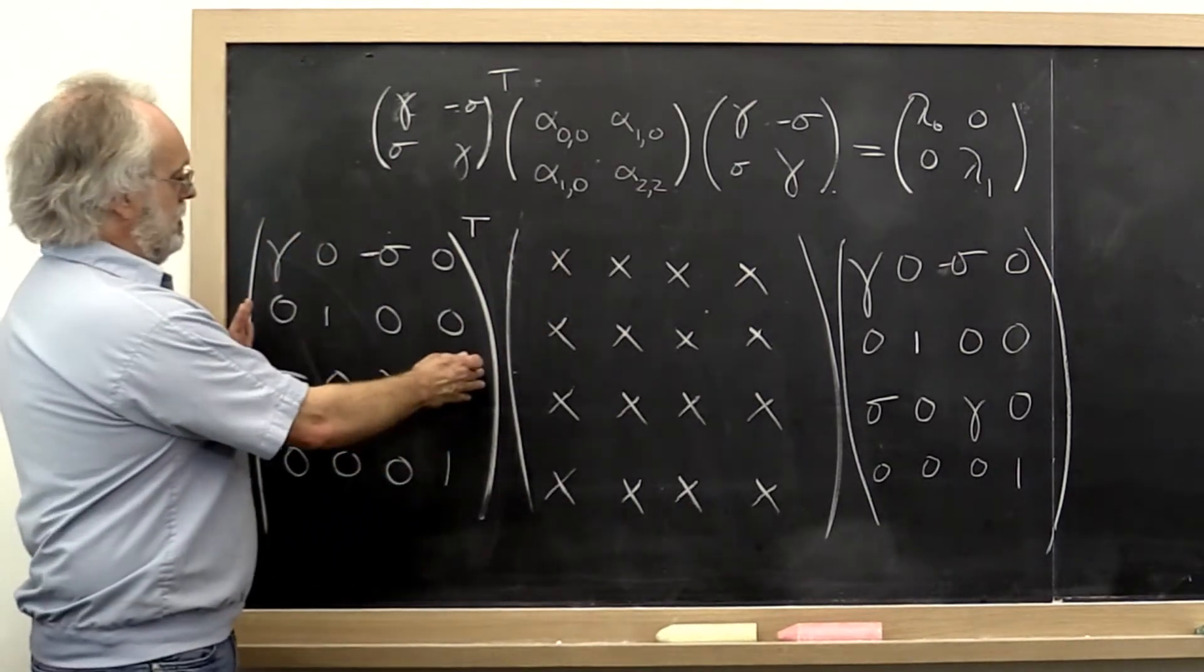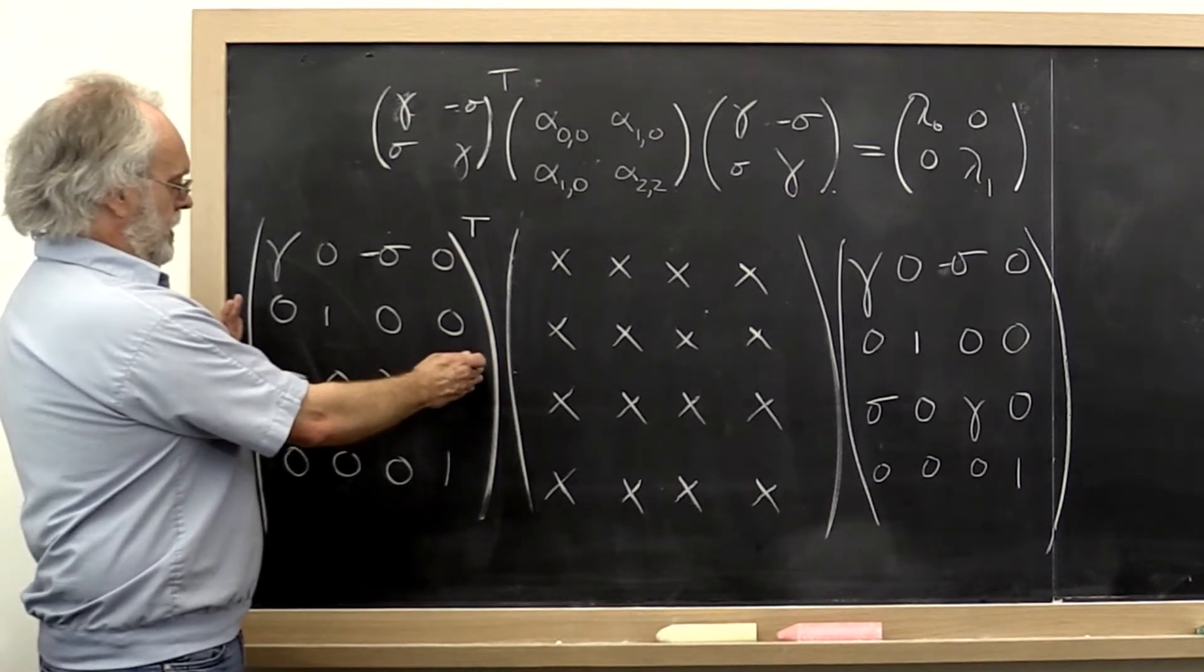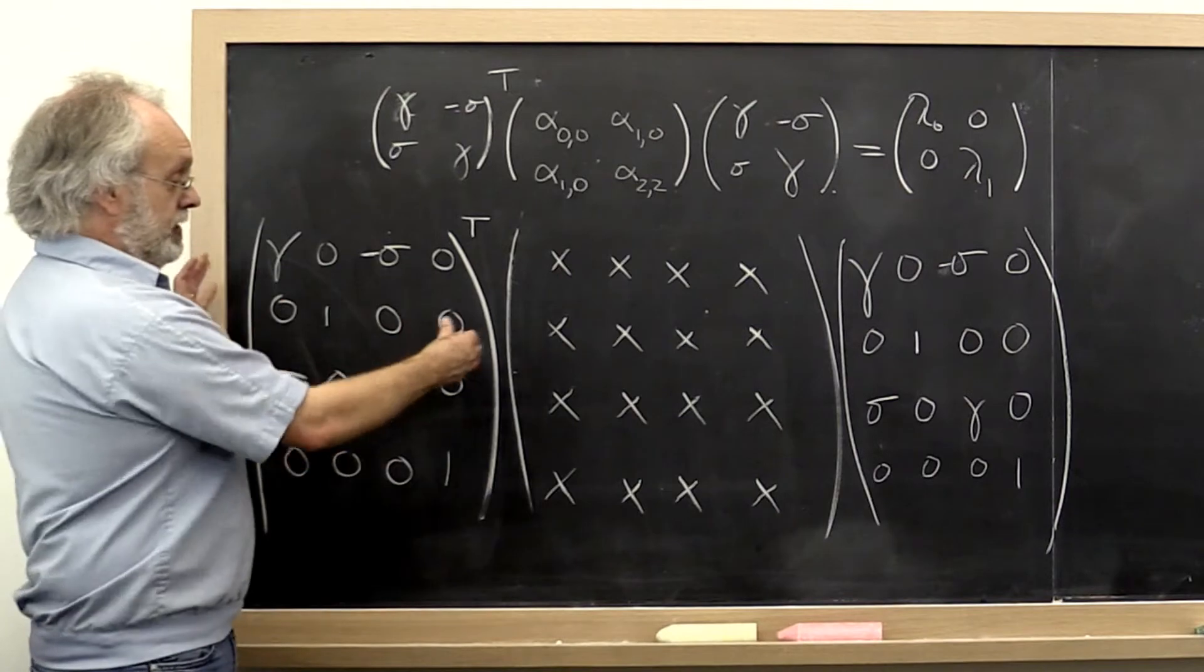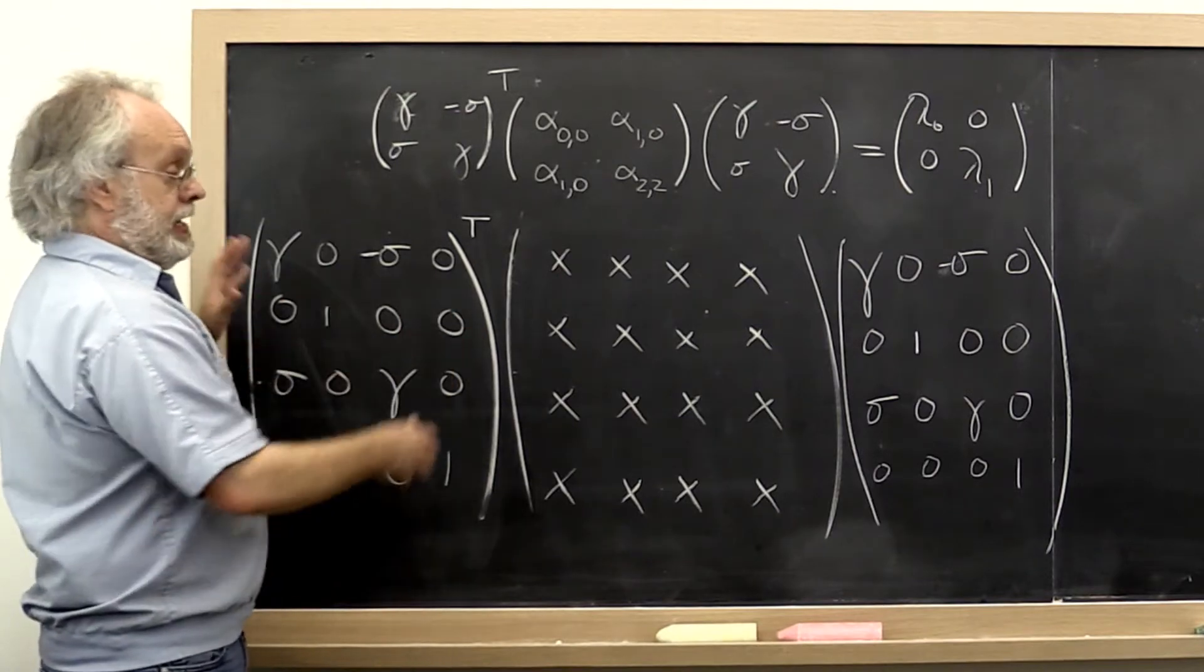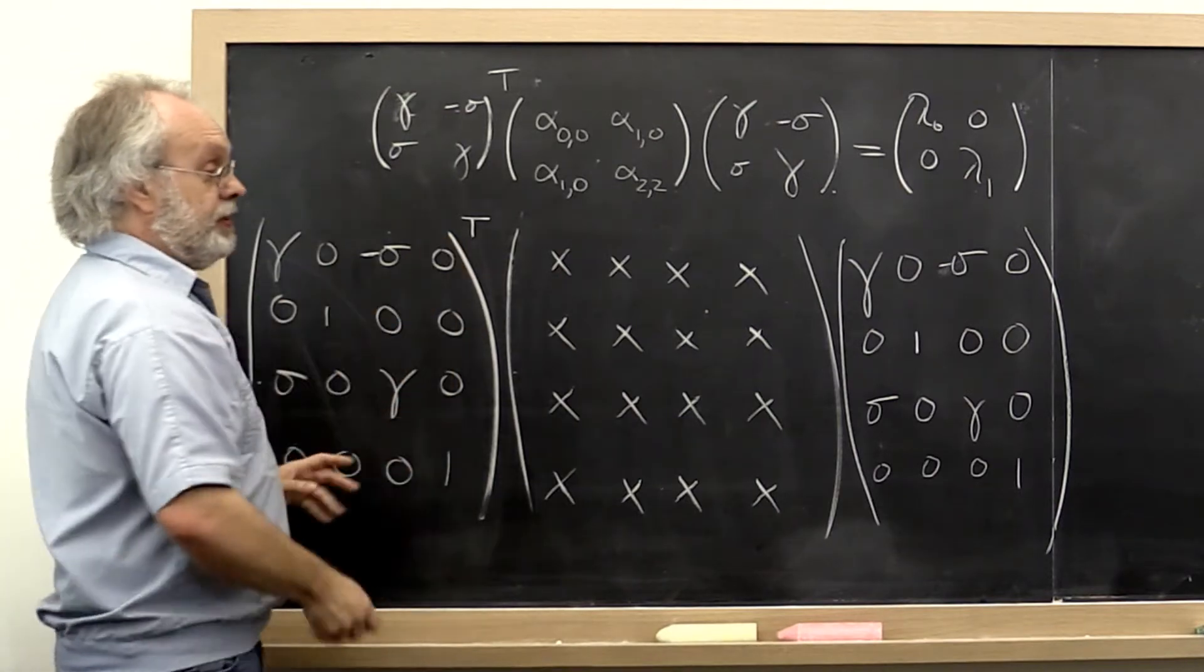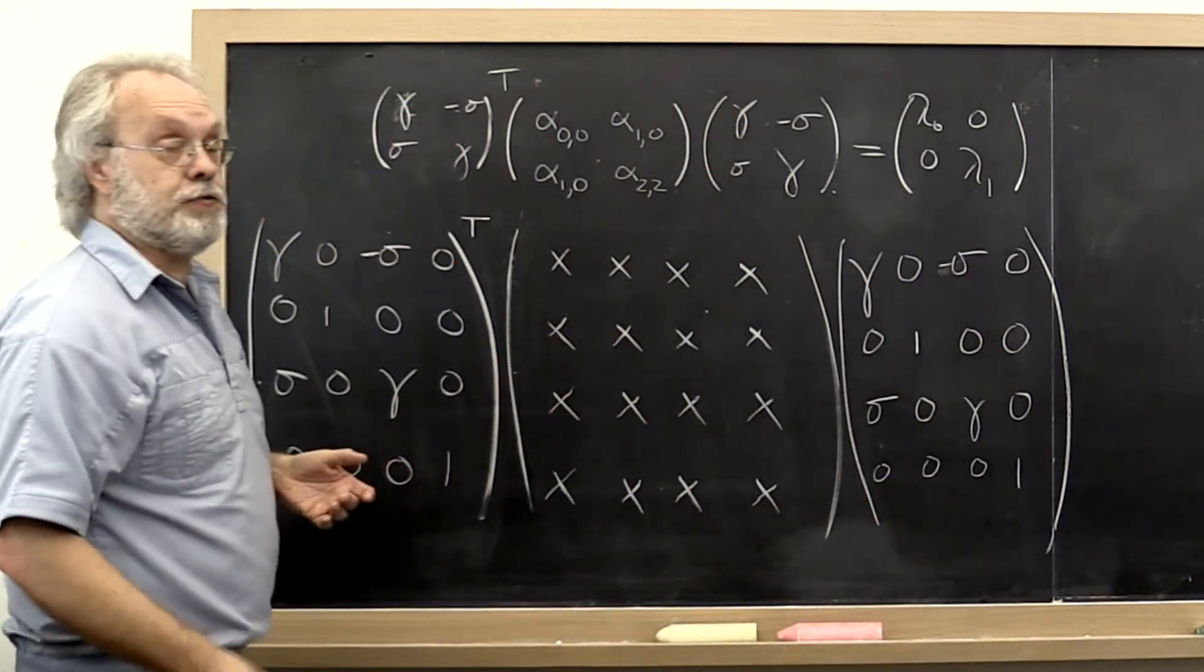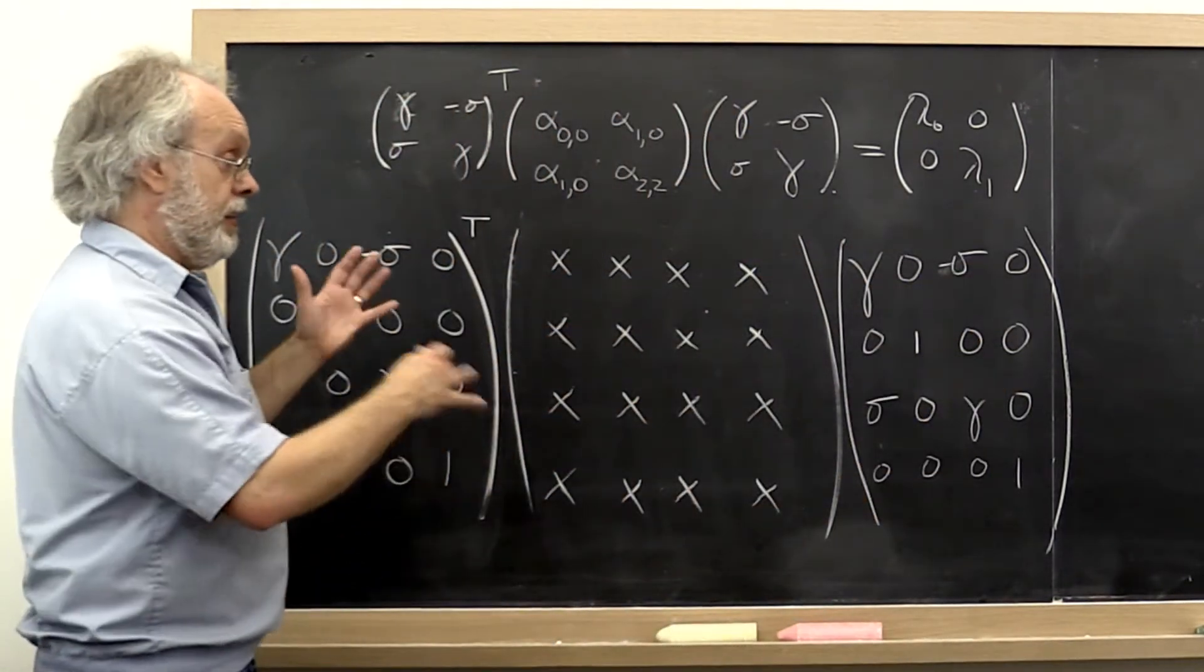What I have here is a Jacobi rotation, except that I have embedded it in a unitary matrix. And of course we apply this from the left and from the right because we want to do unitary similarity transformations in order to preserve eigenvalues.